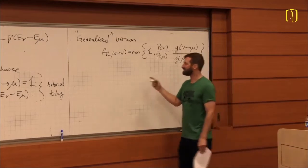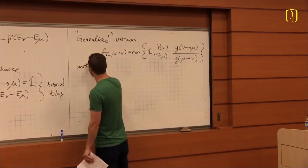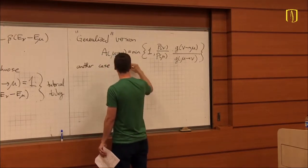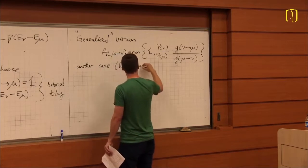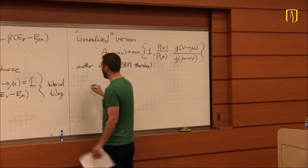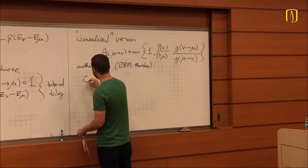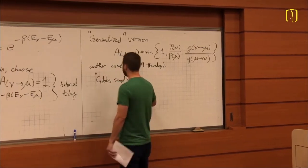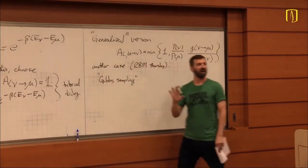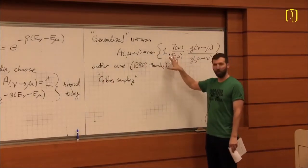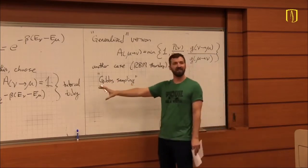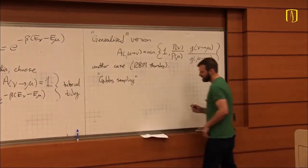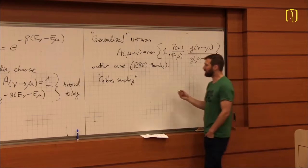Another specialized case relevant for the restricted Boltzmann machine on Thursday is called Gibbs sampling. Gibbs sampling and Metropolis sampling are often considered very different, but this generalized formula is a way of connecting the two. If you see Gibbs sampling, it's nothing to be scared of — all it is is sampling with conditional probabilities.